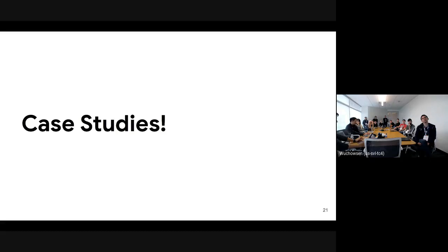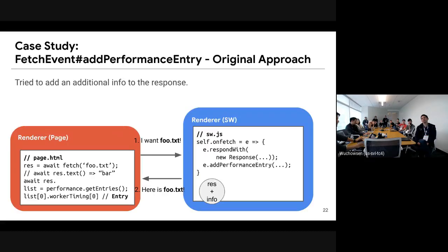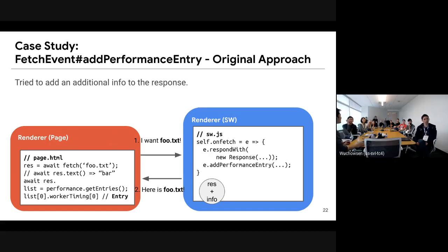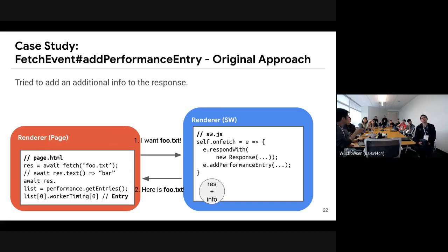Now for the case studies. The first case is about a new feature under implementation: FetchEvent's otherPerformanceEntry. It's pretty new, so let me briefly introduce it. How many of you know about the Resource Timing API?